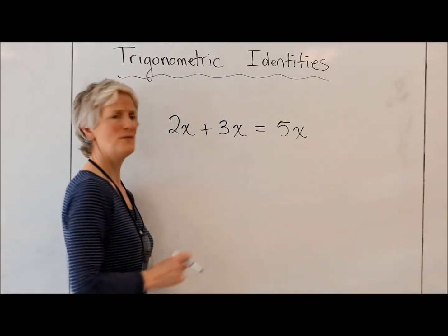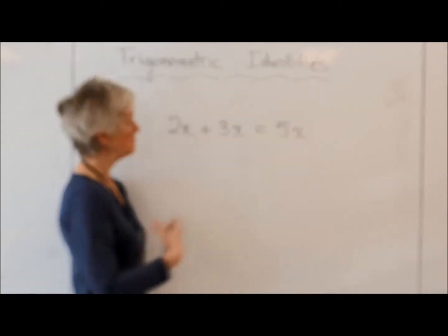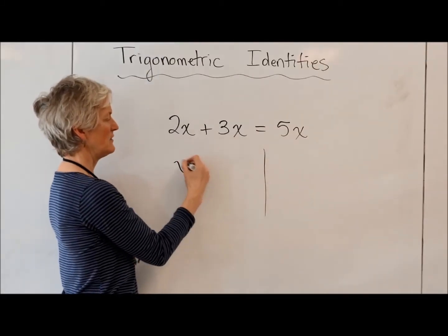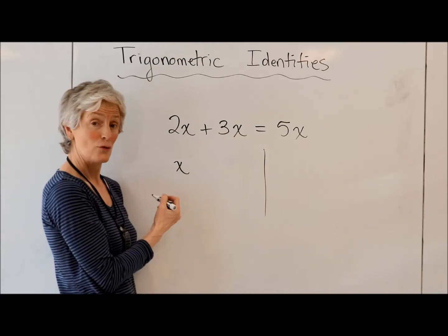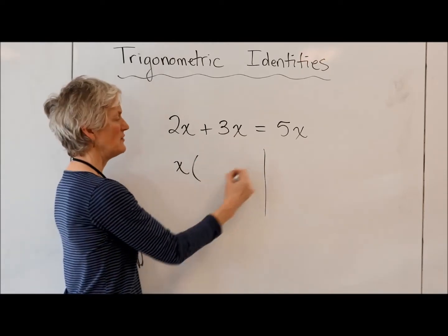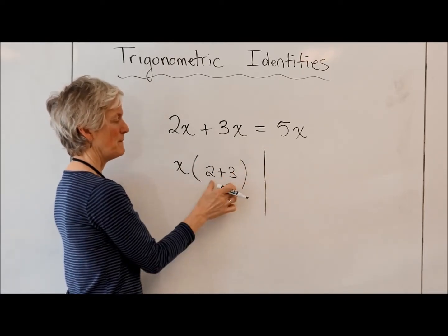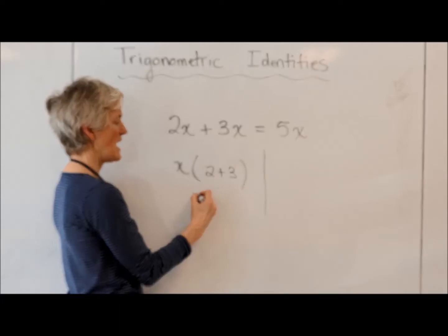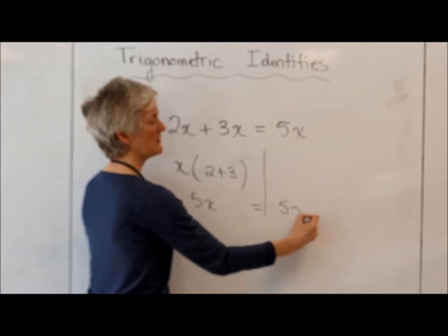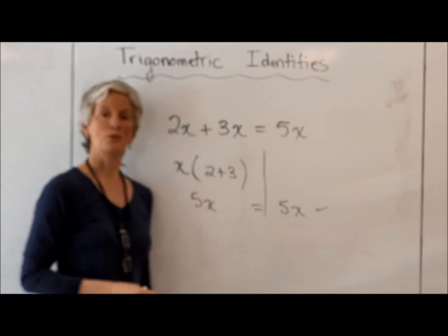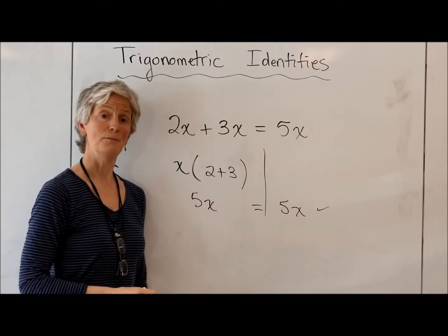How can I prove that 2x plus 3x equals 5x is true? Well, let me do some factoring. I'm going to factor out an x — that's the greatest common factor. I'm left with 2 plus 3, which is 5. So 5x equals 5x. Voila! I have just proven that that is true.